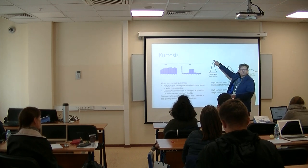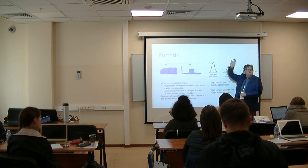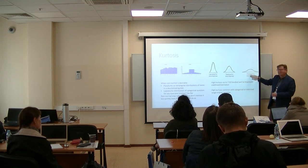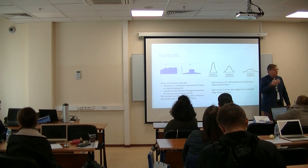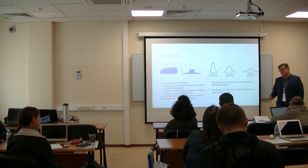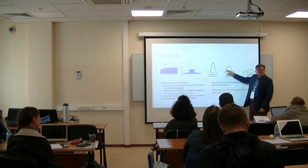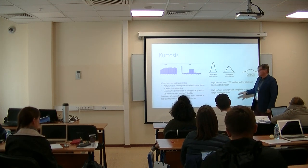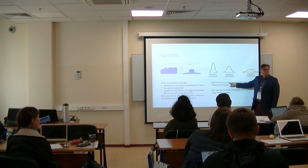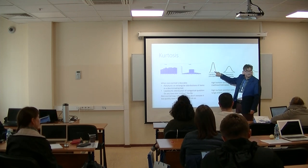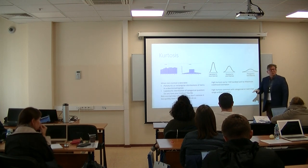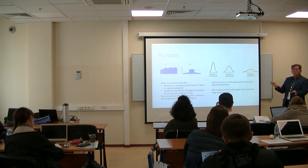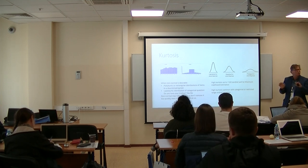Kurtosis is how peaked a distribution is. Lepto means high, meso means normal, and platy — like platypus — is flat. Most everything we do in multivariate statistics assumes our data looks like a normal distribution. Fortunately, the maximum likelihood estimation is very comfortable with kurtosis of up to seven. So if you get high kurtosis, it might be okay. But there are always ways to transform it so you get back into a more normal distribution.